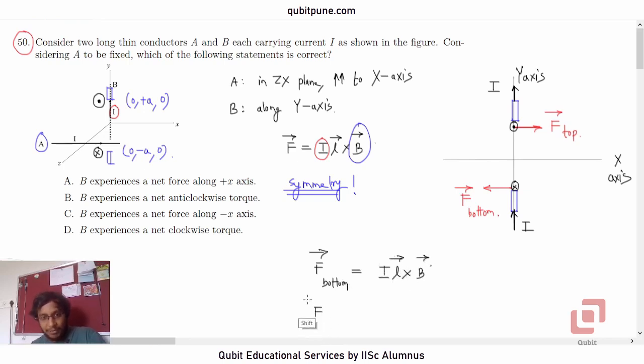Now if we wish to estimate F top, it will be I L bar cross negative B bar. So it has to be negative of F bottom. Correct? Yes.